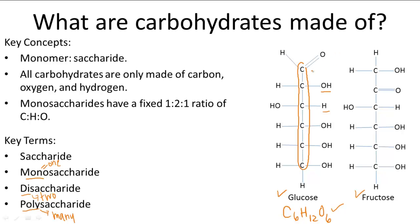Glucose has a double bonded oxygen on the top, but fructose has a double bonded oxygen one position from the top. That's the only difference between those two structures, but it makes all the difference between the monosaccharides.